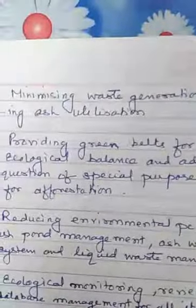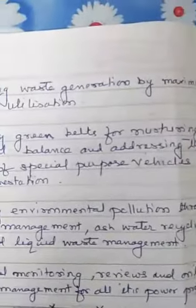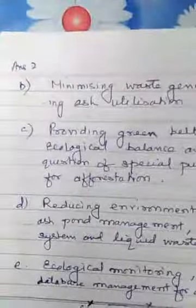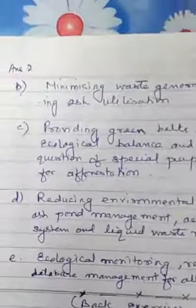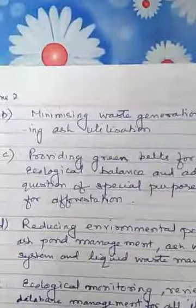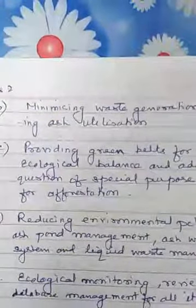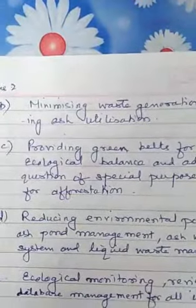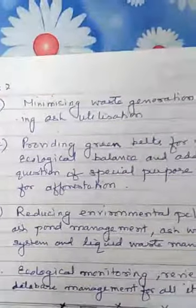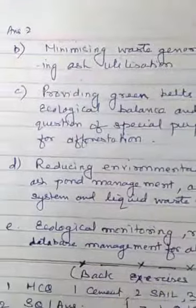Third: providing green belts by nurturing biological and ecological balance, using special purpose vehicles for afforestation. These vehicles are used for planting more and more trees so that more oxygen is released and more carbon dioxide is absorbed. Green belts will thereby minimize the air pollution level.